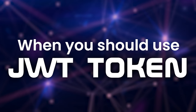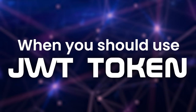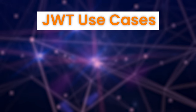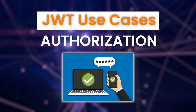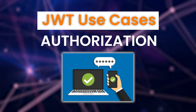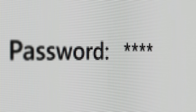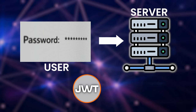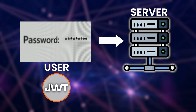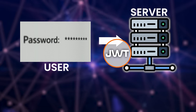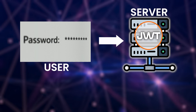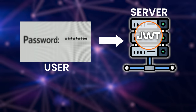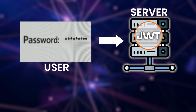Now let's talk about when you should use JWT tokens. There are two main use cases for these tokens, the first being authorization. A typical authorization flow with JWT tokens involves a client signing in or registering for an account and then being issued a JWT token by the backend server. From now on, the client will submit this token with all of their future requests, and this is what will allow them to access routes, services, and various resources that are permitted by that token.